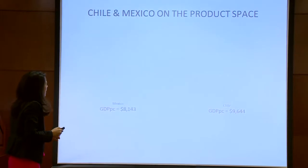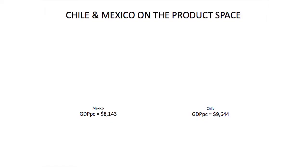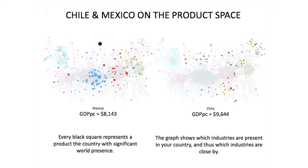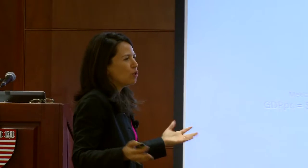Where you are in the product space matters. If we think of Mexico and Chile — very similar income per capita — which one holds higher promise for growth? We're kind of divided. If you look at their product spaces, you can see a clear picture in our model.